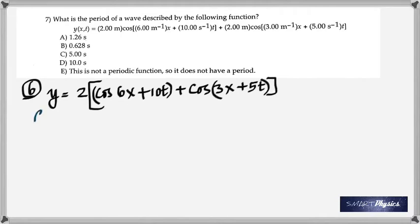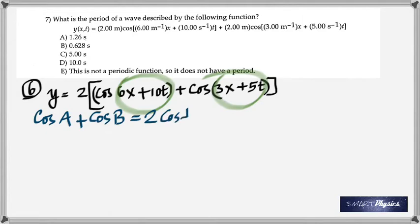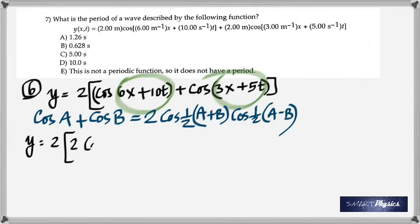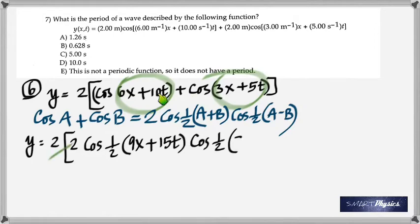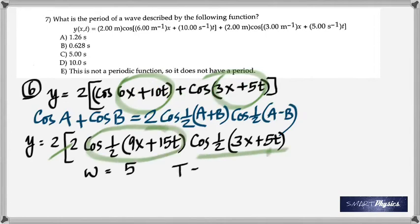That's cos, that's A, that's B, and cos A plus cos B is 2 cos one half A plus B times cos A minus B, or one half A minus B. So when you use that, you're going to get 2 times 2 cos half 9x plus 15T. That's what you get when you add these. When you subtract, you're going to get 3x plus 5T.